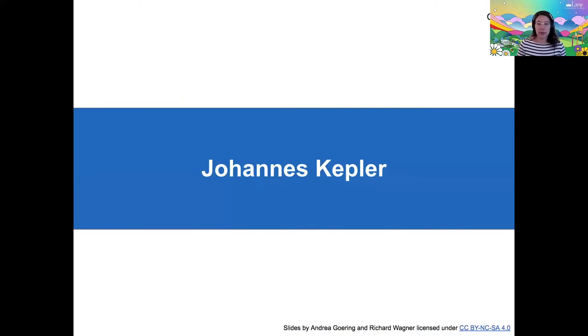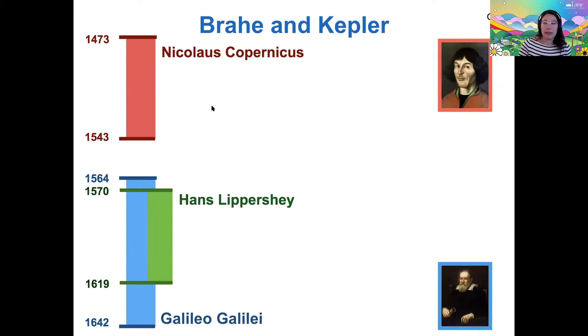So this brings us to another astronomer of historical notability, and that would be Johannes Kepler. So if we say Copernicus is now at the top of our new astronomy timeline, we have Galileo and Hans Lippershey, the inventor of the telescope. So this spans from about the 1400s to the 1600s.